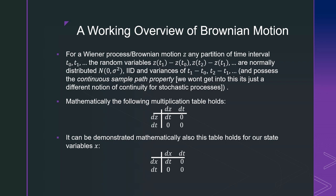They are normally distributed that are IID and their variances are just the differences in time. And there's another property here, which I'm not going to get too much in depth. It possesses this thing known as the continuous sample path property, which is a different notion of continuity for stochastic processes.